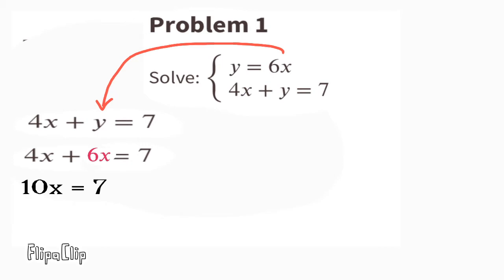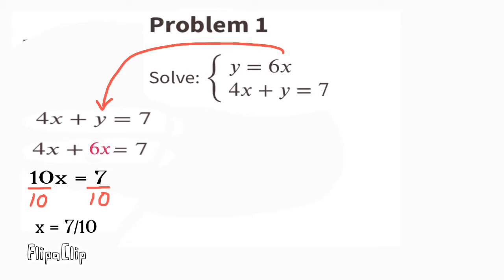Let's find out how much the value is for 1x. We'll do that by dividing both sides by 10. 10x divided by 10 is x, and 7 divided by 10 is 7 tenths. So x equals 7 tenths.